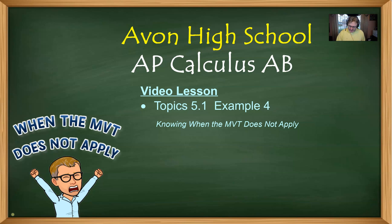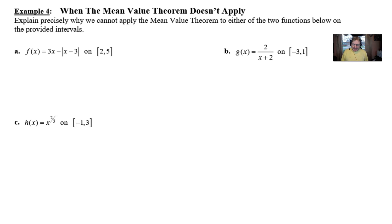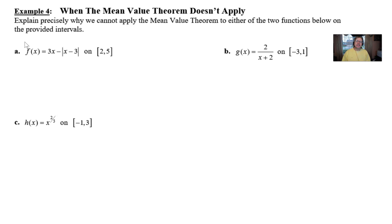So let's take a look at this example. The title, 'When the Mean Value Theorem Doesn't Apply,' implies that the mean value theorem is not going to work for any of these three — so we're not going to take derivatives and set them equal to each other, but rather determine exactly why we cannot apply the mean value theorem. Remember, the mean value theorem has two criteria: the function must be continuous on the closed interval and differentiable on the open interval.